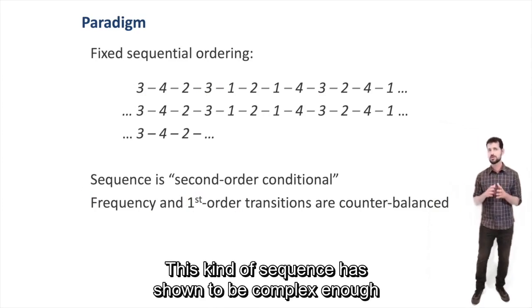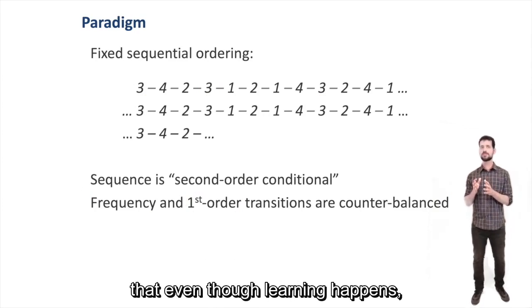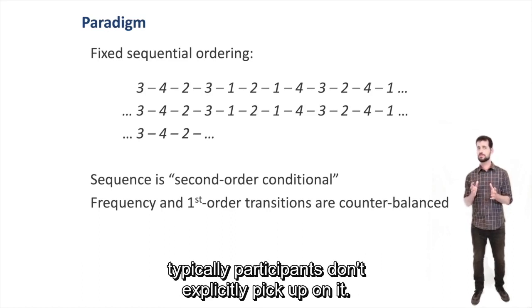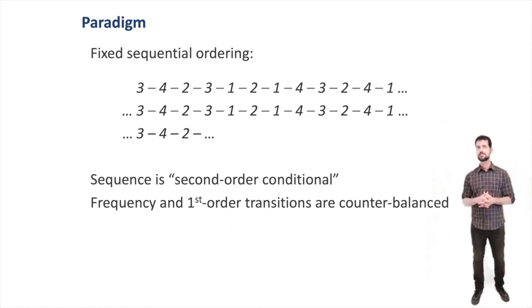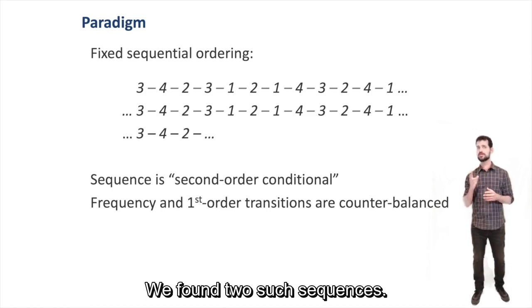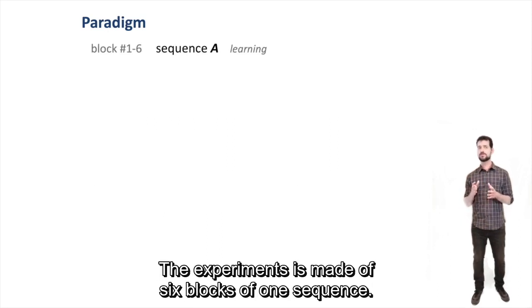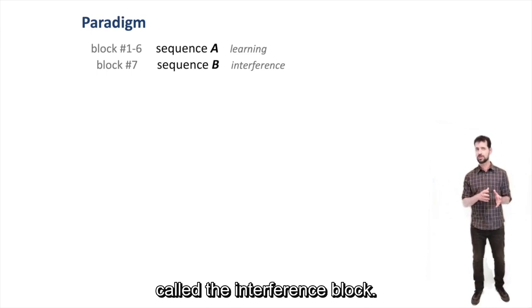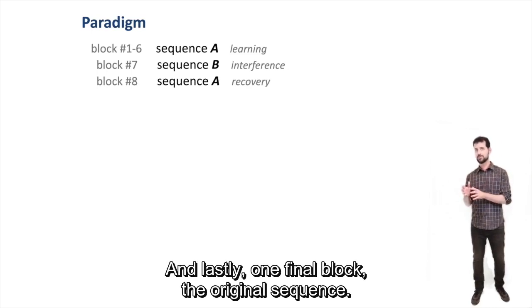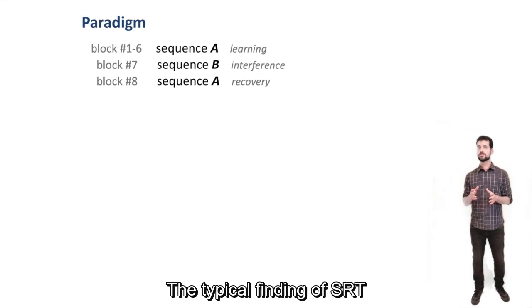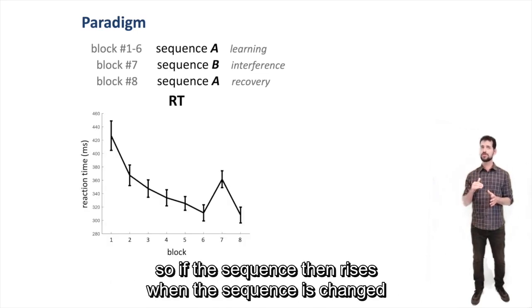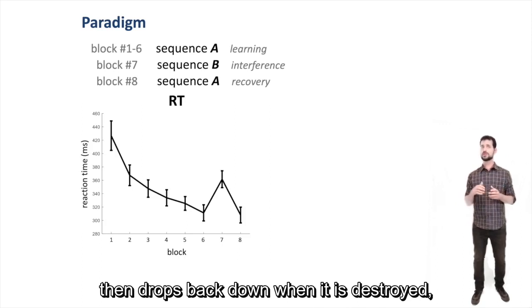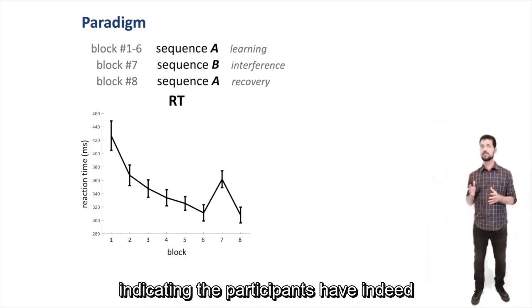This kind of sequence has been shown to be complex enough that even though learning happens, typically participants don't explicitly pick up on it. We form two such sequences, sequence A and sequence B. The experiment is made of six blocks of one sequence, then one block of the other sequence called the interference block, and lastly one final block of the original sequence. The typical finding of SRT is that response time drops with practice of the sequence, then rises when the sequence is changed, then drops back down when it is restored, indicating that participants had indeed acquired the sequence.